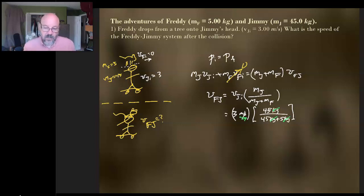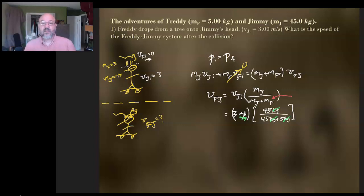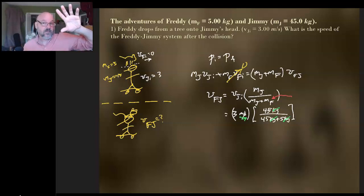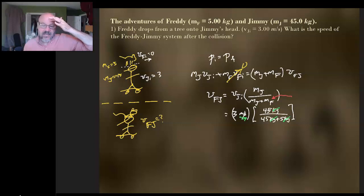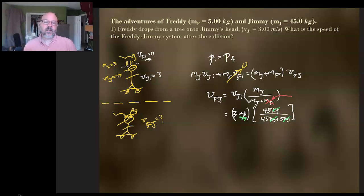The nice thing about that is you can begin to play games. What if the mass of Freddy got smaller and smaller? Freddy's a five kilogram cat — that's like 11 pounds, so he's a big kitty. But if we go smaller — maybe Freddy's a gerbil with a mass of 20 grams — then it begins to not even matter. We're left with M_J over M_J, and Jimmy doesn't even realize anything's happened — until he feels some scratching on the top of his head.